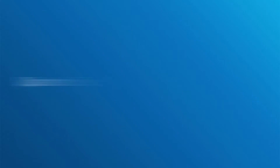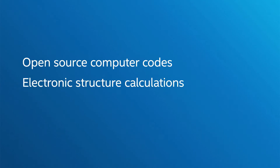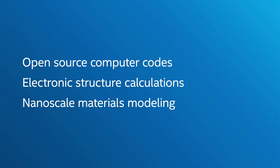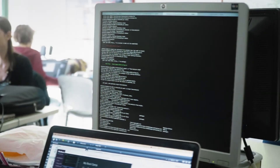We have worked a lot in the past optimizing the Intel platform and software tools to run Quantum Espresso in the best way. The use of the HPC Orchestrator helps us minimize the effort of setting up the platform, setting up the tools, and setting up the compilers, in the sense that everything is automated so we can concentrate our effort on the optimization part of the software.